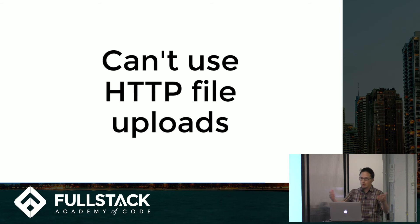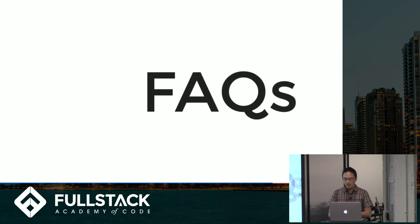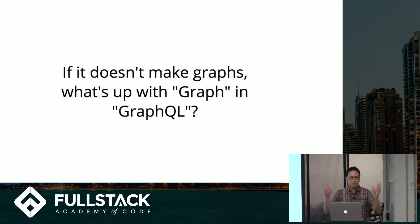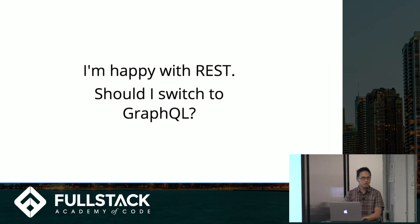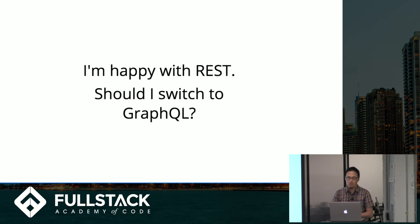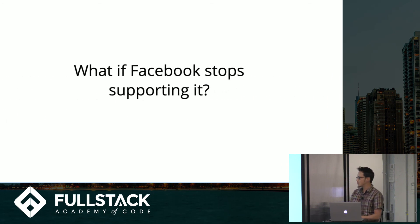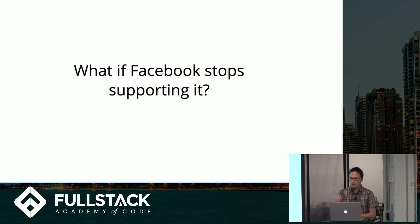Similarly, you can't use HTTP file uploads with GraphQL since it only uses fields, whereas REST supports file system uploads and URL-based uploads pretty well. Some frequently asked questions: if it doesn't make graphs, why is it called GraphQL? The theory is that if you have a business and you're defining all the relationships between your different nodes, all those lines of relationships make up a graph — so that's why it's called GraphQL. If you're happy with REST, should you switch? The answer is no — just because others switch doesn't mean you have to. If your app is still performant, stick with REST. You can actually use both in your app as well. And if Facebook stops supporting GraphQL, the community around it is pretty big, so it would still continue to grow.